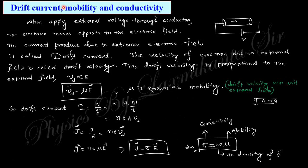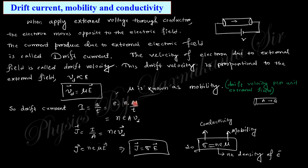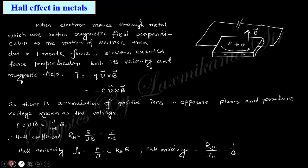Drift current, mobility, and conductivity: drift current is the current that flows due to an external electric field, while diffusion current arises from a concentration gradient. Drift current is proportional to the applied electric field; this proportionality constant is called mobility, which is the drift velocity per unit applied electric field. The drift current density j equals sigma E. The conductivity sigma equals neμ, where n is the carrier density and μ is the mobility — an important relation.